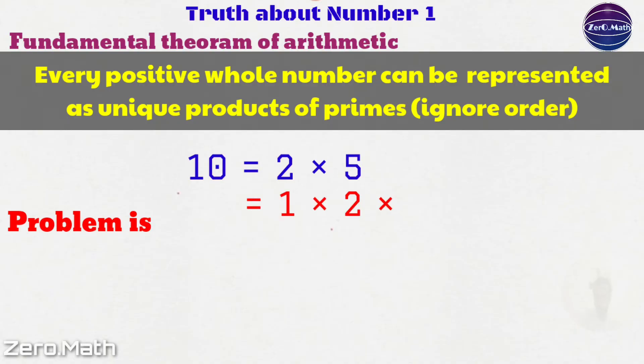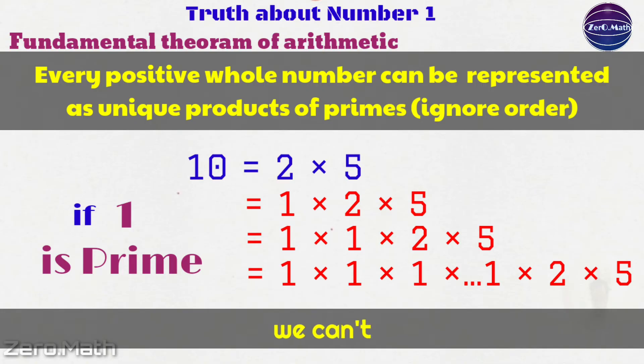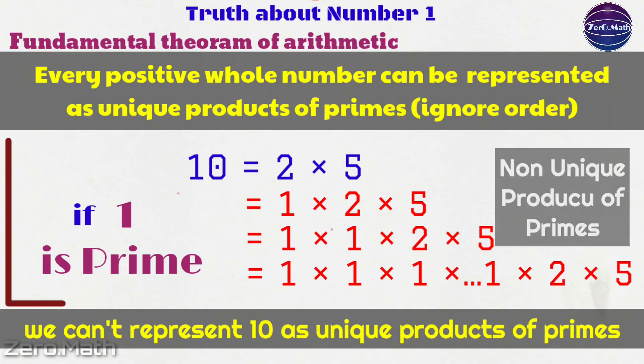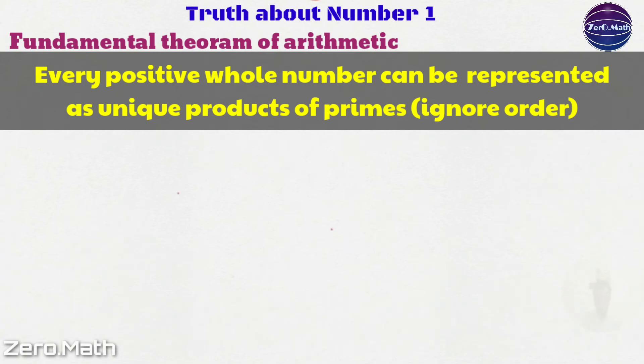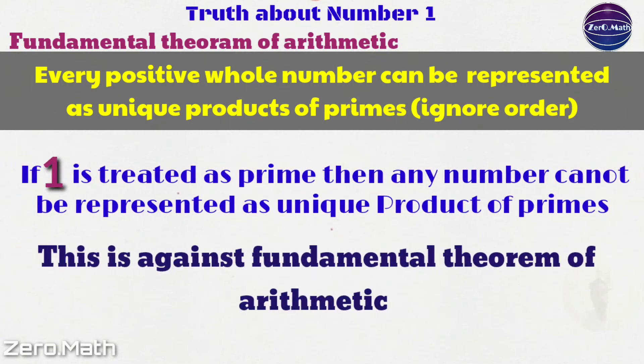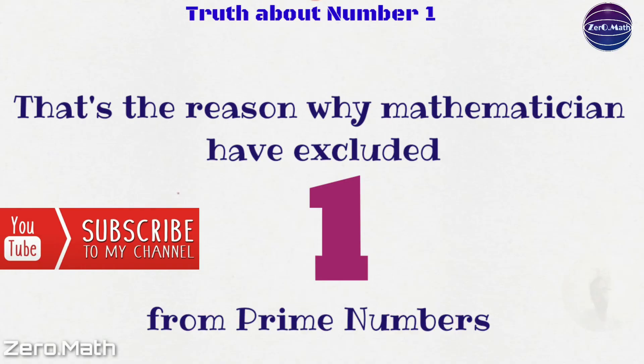The problem is we can also represent 10 as 1 into 2 into 5. We can also represent it as 1 into 1 into 2 into 5, 1 into 1 into 1 into 2 into 5 and so on. Now, if 1 is treated as a prime, then we would not have the unique way of representation of 10 as a unique product of prime numbers. It is against the fundamental theorem of arithmetic. That's the reason why mathematicians have excluded number 1 from the prime numbers.